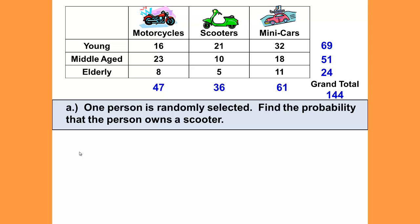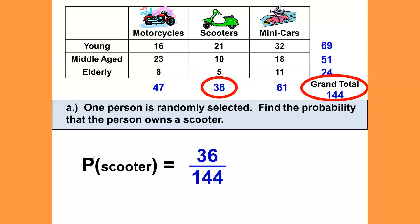Question A: One person is randomly selected. Find the probability that the person owns a scooter. The probability of a scooter—well, how many scooters do we have? 36 out of the grand total of 144. That's simply 36 over 144. Put that in your calculator, and that'll give you 0.25.